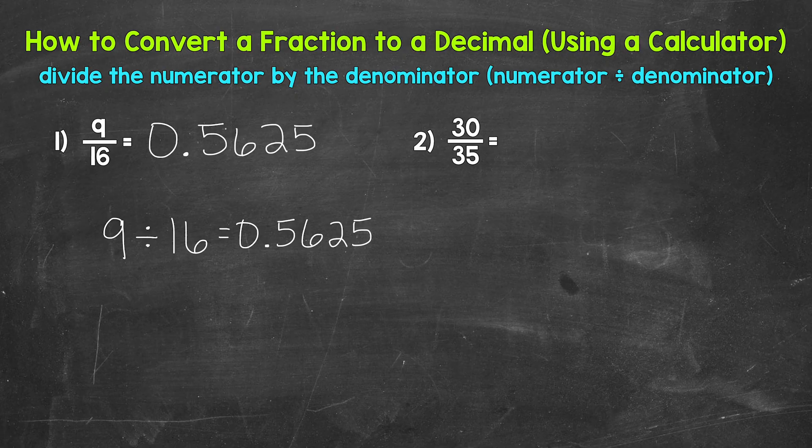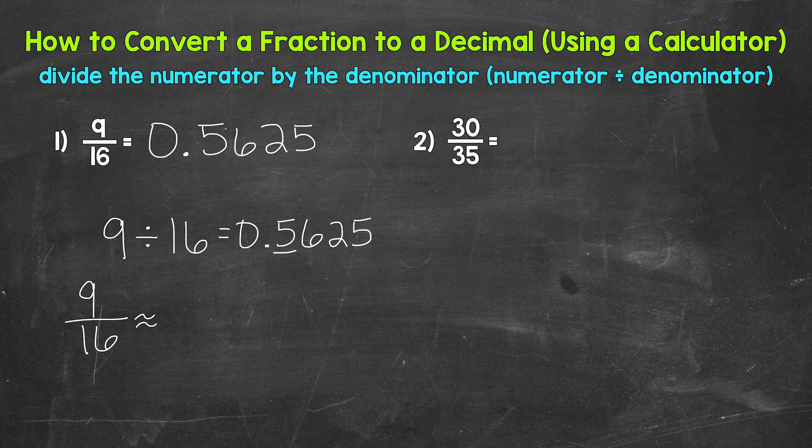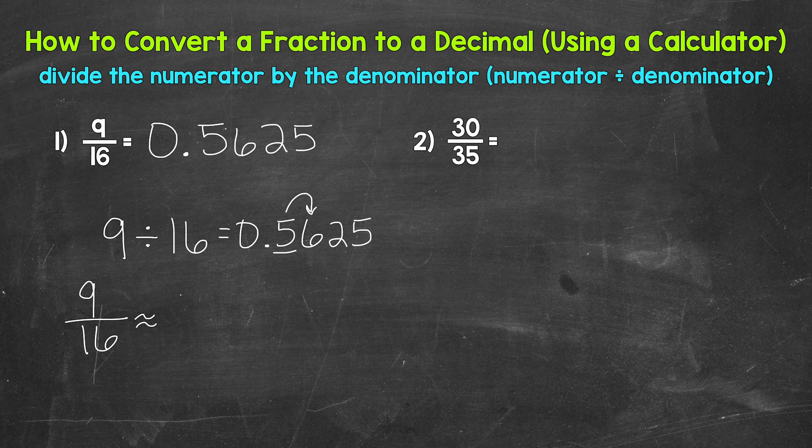we can round to the tenths place, hundredths place, whatever place we want to. Let's do tenths and hundredths here. So 9 sixteenths is approximately, and I'm using the approximately symbol here since we are rounding. It's not exact. Let's start with the tenths place. We have a five in the tenths with a six in the hundredths. So we round up. 9 sixteenths is approximately six tenths.